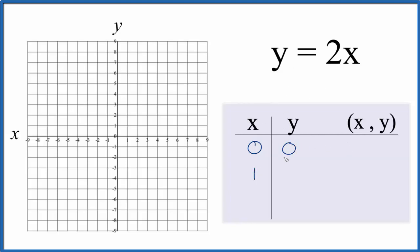How about 1. 2 times 1 is 2, and then if we put a negative 1 in, 2 times negative 1, that'll give us negative 2 for y. So these are the points that we'll graph for the linear equation, y equals 2x.